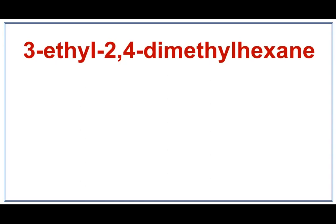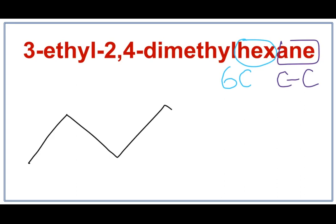Let's draw the structure for 3-ethyl-2,4-dimethylhexane. 'Hex' tells us that there are six carbons present in the longest carbon chain. 'Ane' tells us that this is an alkane, meaning there are only single bonds between carbons. Let's draw the six carbons, counting till 1 less: 1, 2, 3, 4, 5. Let's number them: 1, 2, 3, 4, 5, and 6.